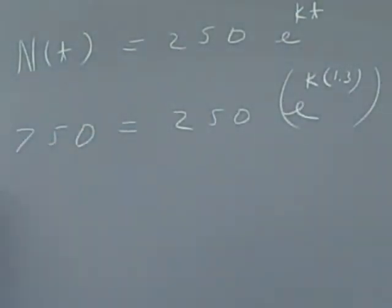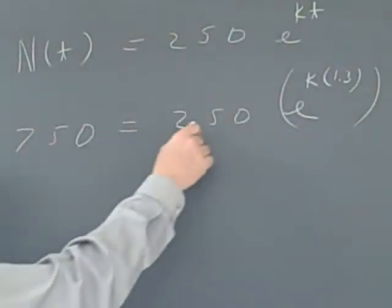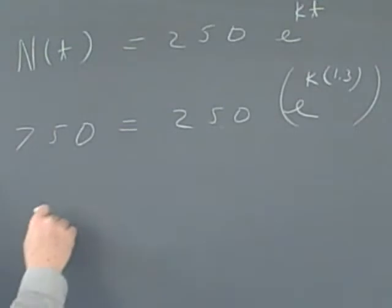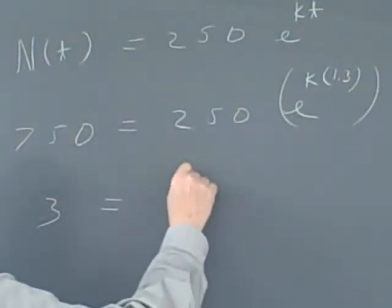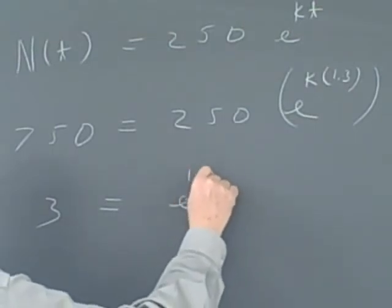You ought to get these steps down. And of course, 750 divided by 250 will give me the number 3. So this equals e to the 1.3k. I'll use the commutative property of multiplication.